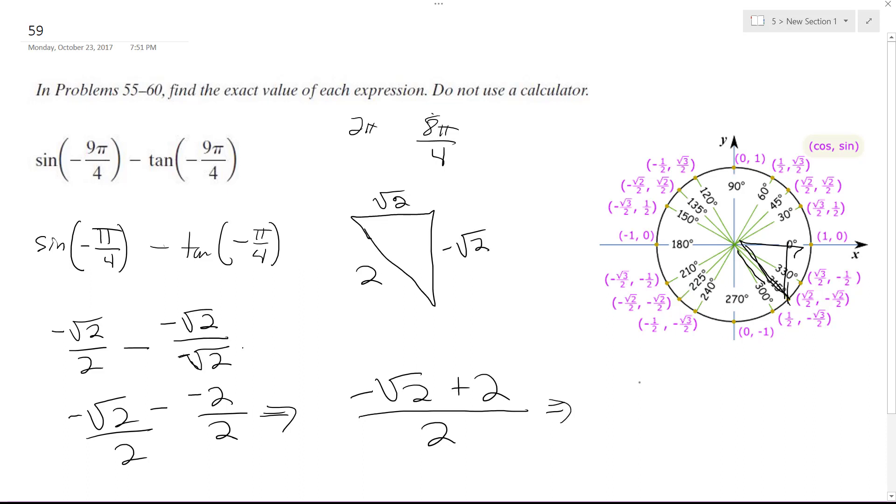And if you want further, you can just rearrange this as 2 minus √2 over 2 if you want. But either way, either one's correct. I'll just circle this one because it's in order of how the problem was set up. Alright, I hope that helps you.